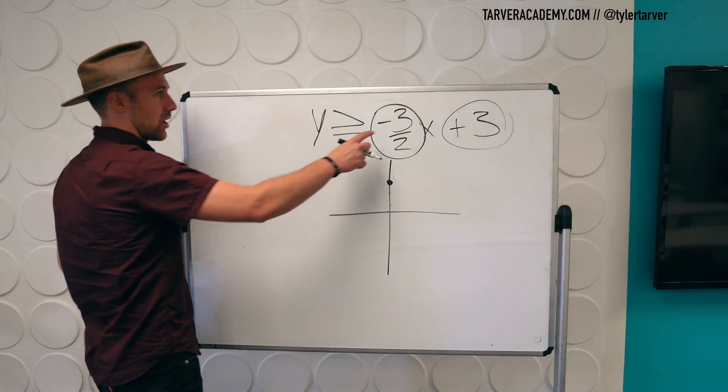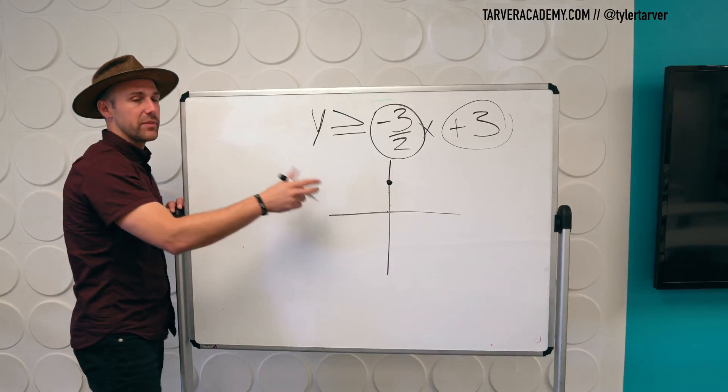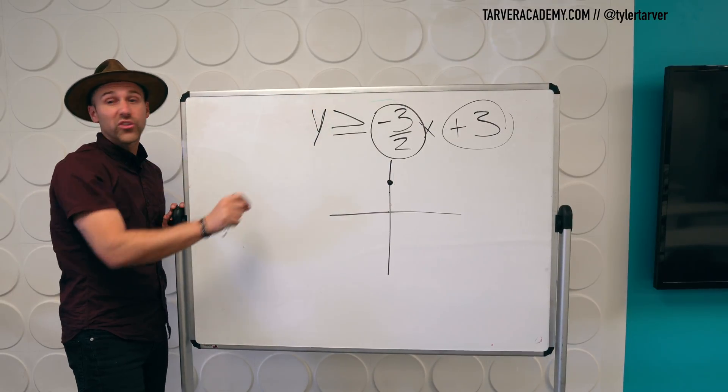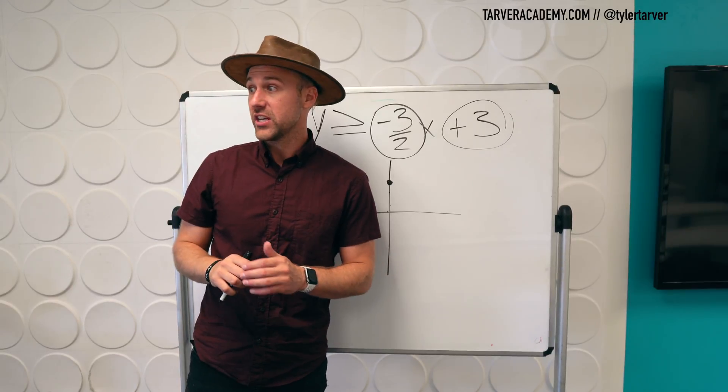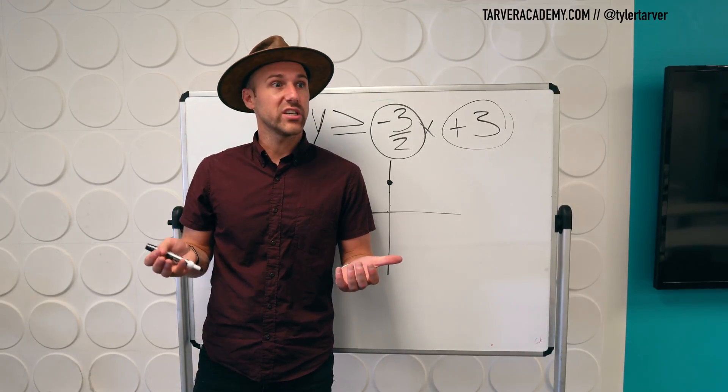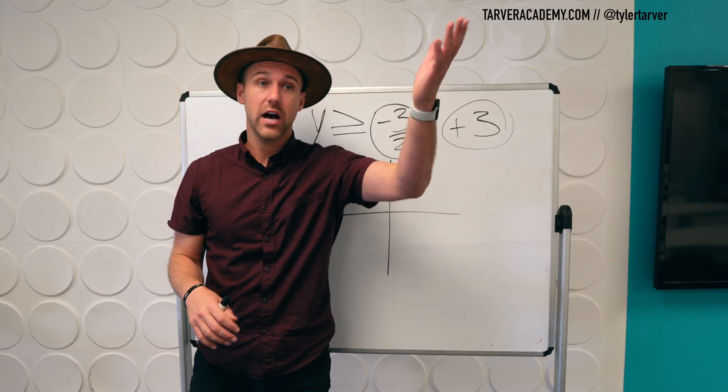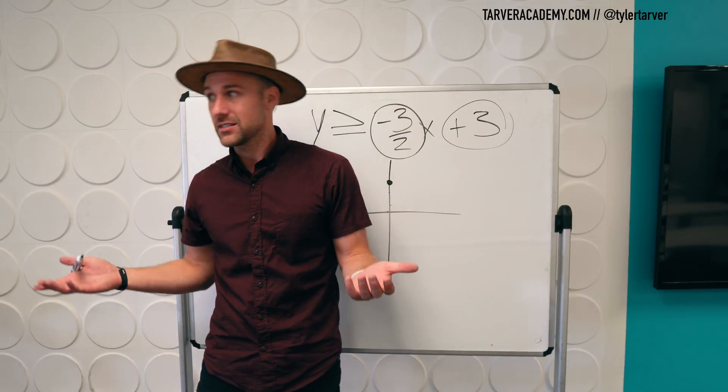So like I said to a couple of you guys that asked, the negative can be attached to the three or the two. The only way you can get it wrong is by not attaching it to either of them or attaching it to both of them. So the negative, you can go to the top of the three, you can chill with the two. It doesn't matter.